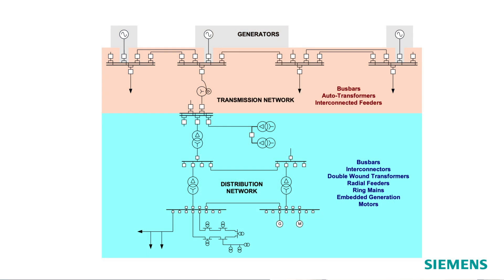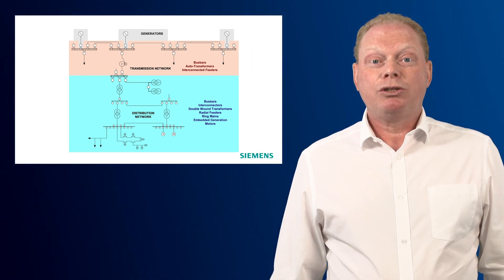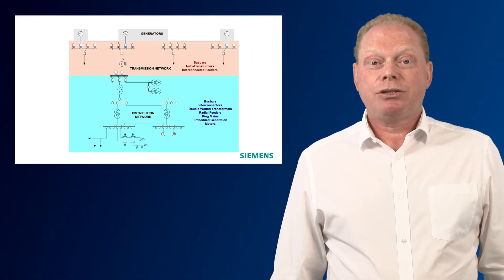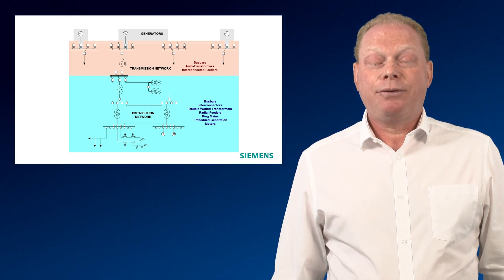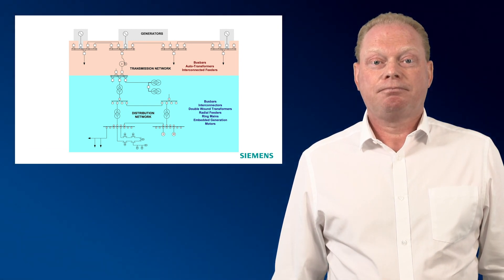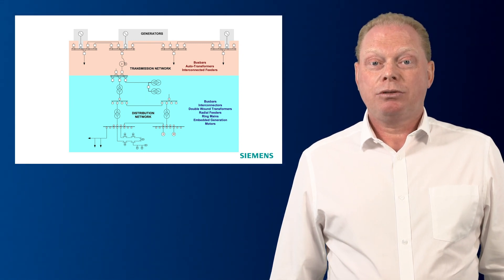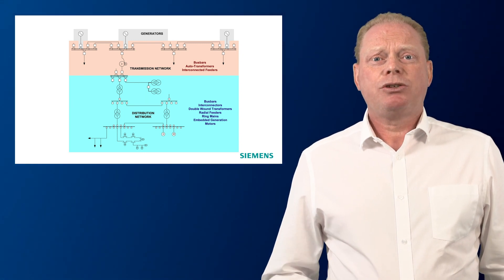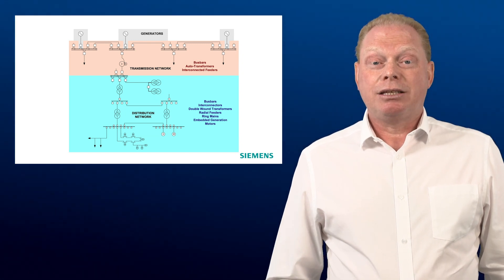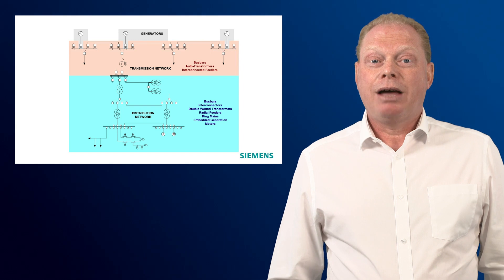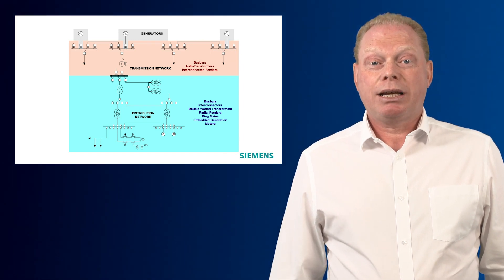For example, system earthing methods and the use of auto-reclose. At medium voltage, ring main systems may be run to increase security and the protection system needs to be able to accommodate these different network arrangements. Also, as more embedded generation is being used, this picture is changing as more generation is being connected at the distribution voltage level, and this also needs to be considered as part of the protection selection.